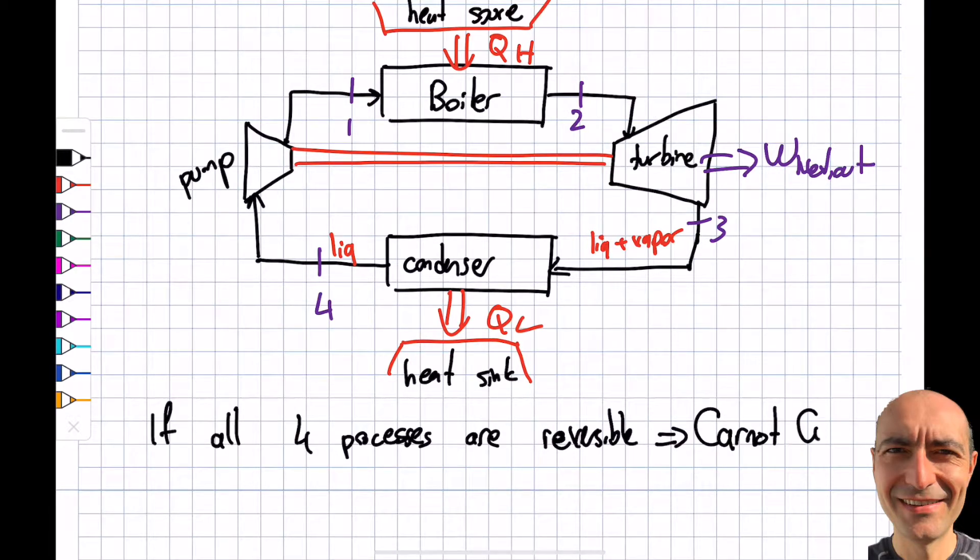As I mentioned in the previous segment, this will have the maximum theoretical efficiency that I obtain from this heat engine. If this is reversible, as the name recommends, I can actually go in reverse and it becomes a Carnot heat pump or refrigerator. The QL and QH are reversed in direction. Now I want to talk more about this process from 1 to 2.